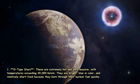1. O-type stars: These are extremely hot and very massive, with temperatures exceeding 30,000 Kelvin. They are bright, blue in color, and relatively short-lived because they burn through their nuclear fuel quickly.